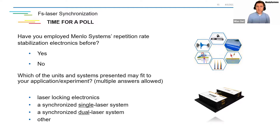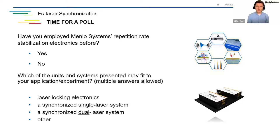Before coming to the next section, I'd like to ask you two polling questions. The first: have you employed Menlo Systems repetition rate stabilization electronics before? Answer yes or no. The second: which of the units and systems I've presented might fit your application or experiment? You can answer multiply. The first answer relates to standard laser locking electronics — i.e., Synchro. The second is dedicated to locking a single laser to a reference. The third is dedicated to a dual laser locking principle, like in our ASOPS systems. I'll leave a moment for you to answer.